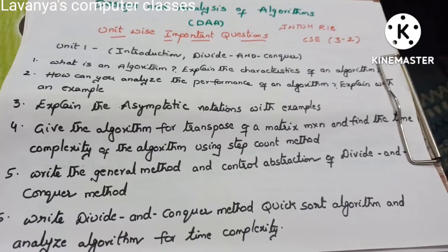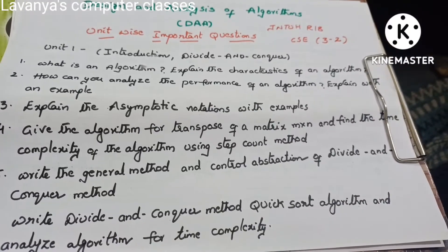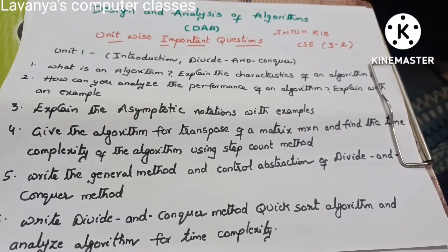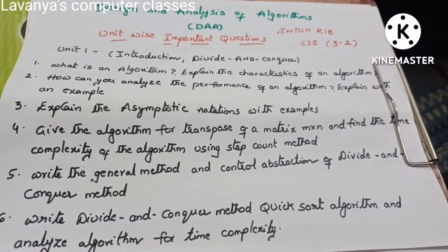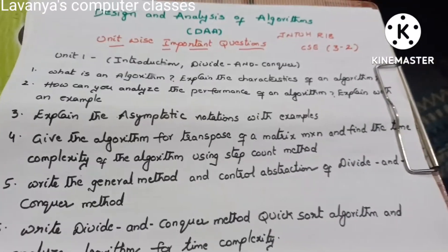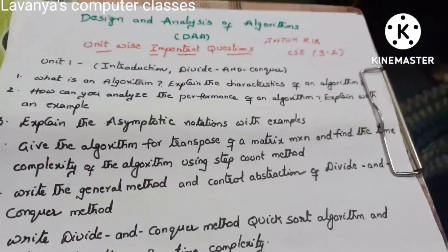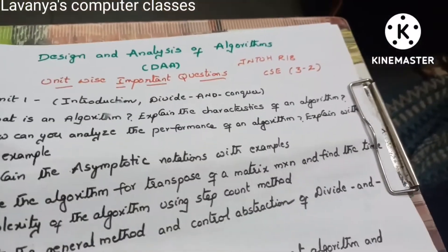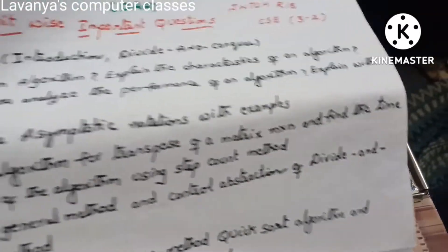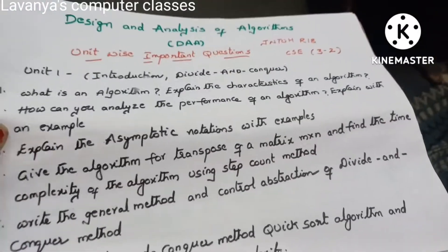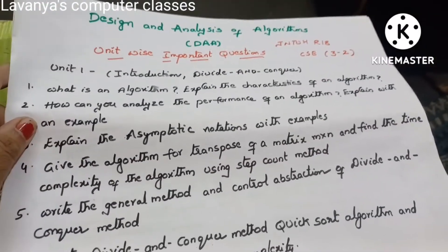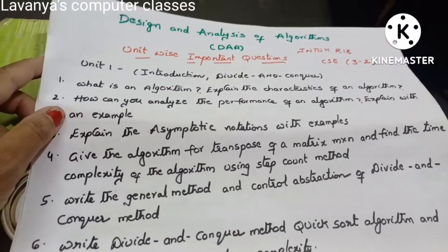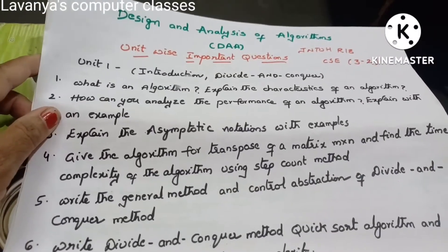Question 4: Give the algorithm for transpose of a matrix and find the time complexity of the algorithm using the step count method. Not only transpose of a matrix — any problem — but the important thing here is the step count method and its explanation.